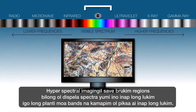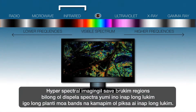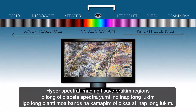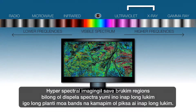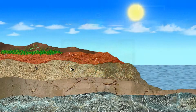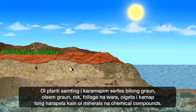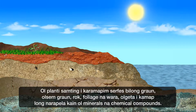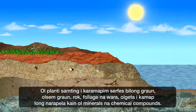Hyperspectral imaging divides regions of those spectra we can't see into many more bands and creates visible images from them. The Earth's surface is covered with a variety of materials like soil, rocks, foliage and water.